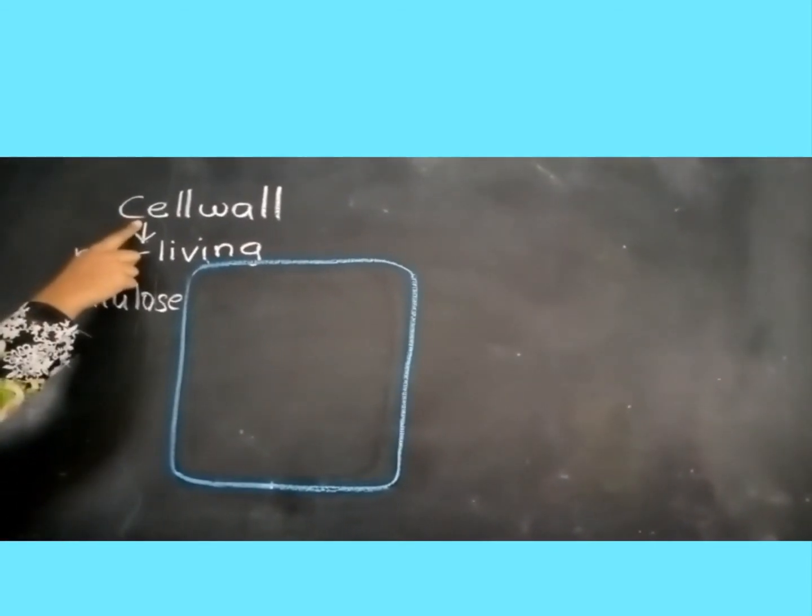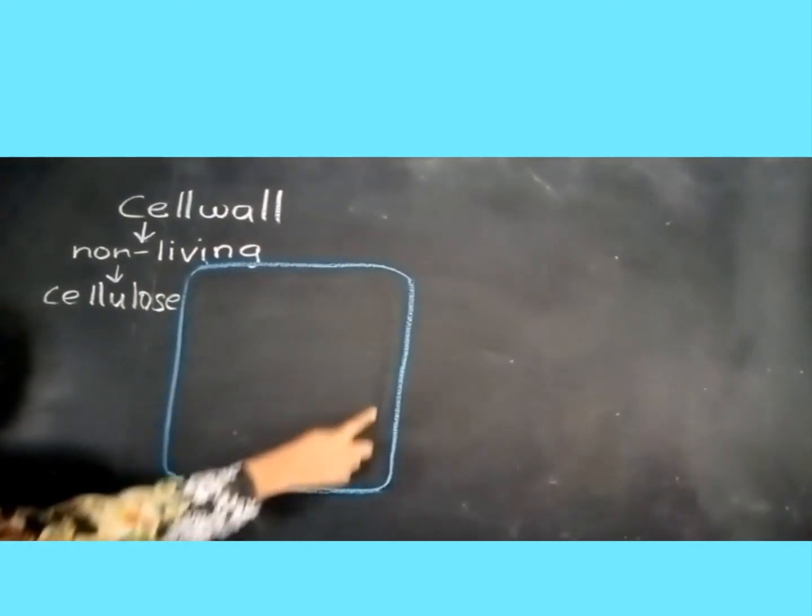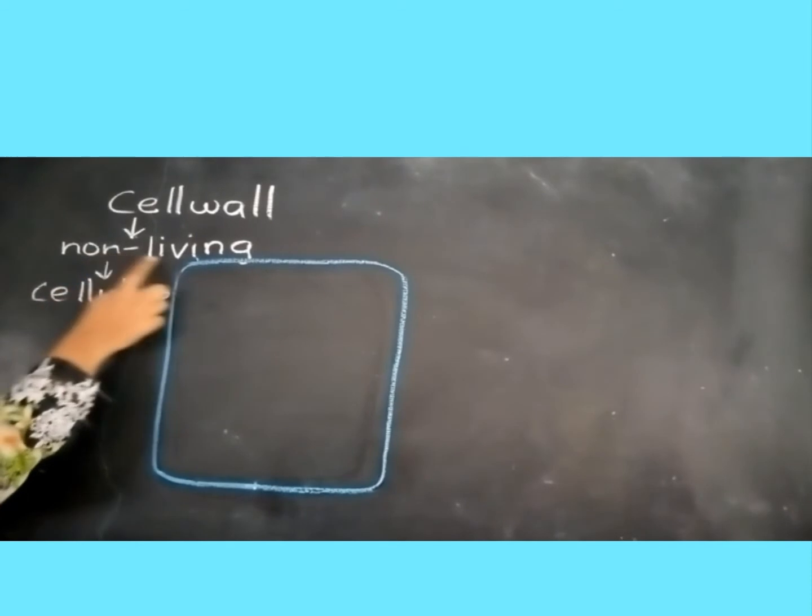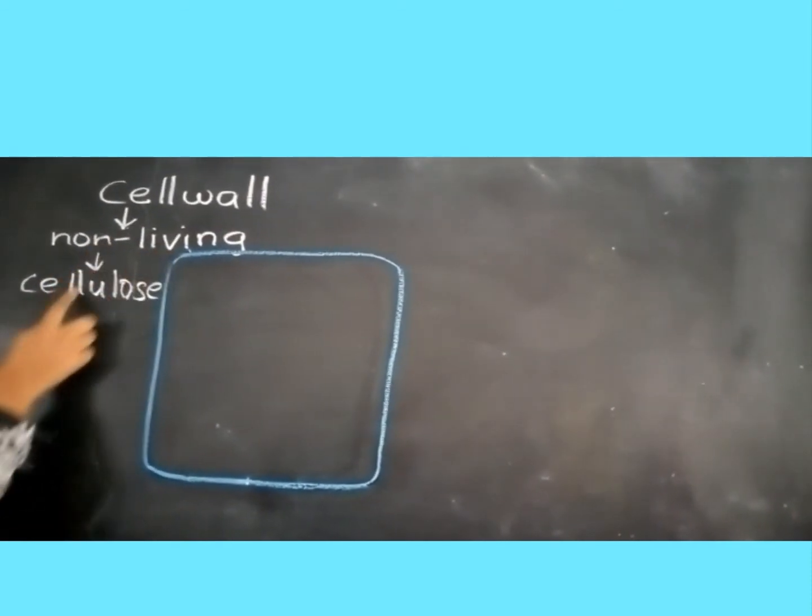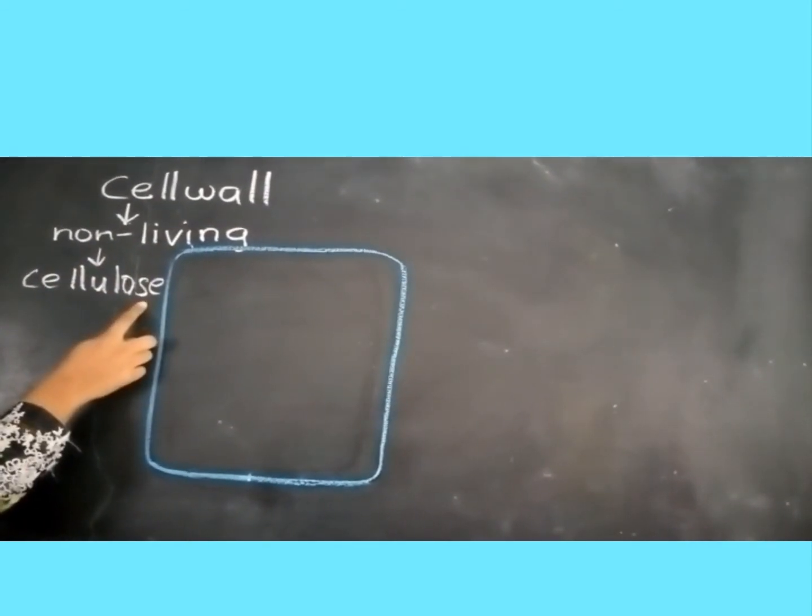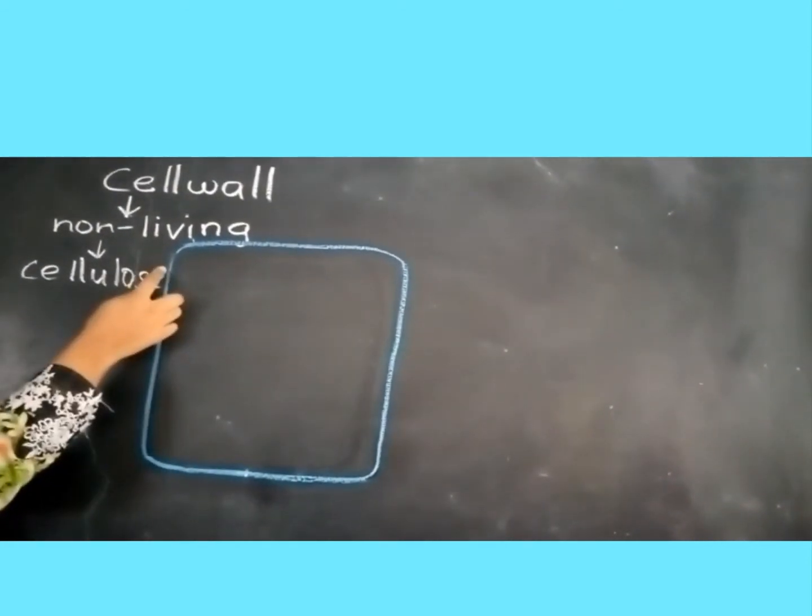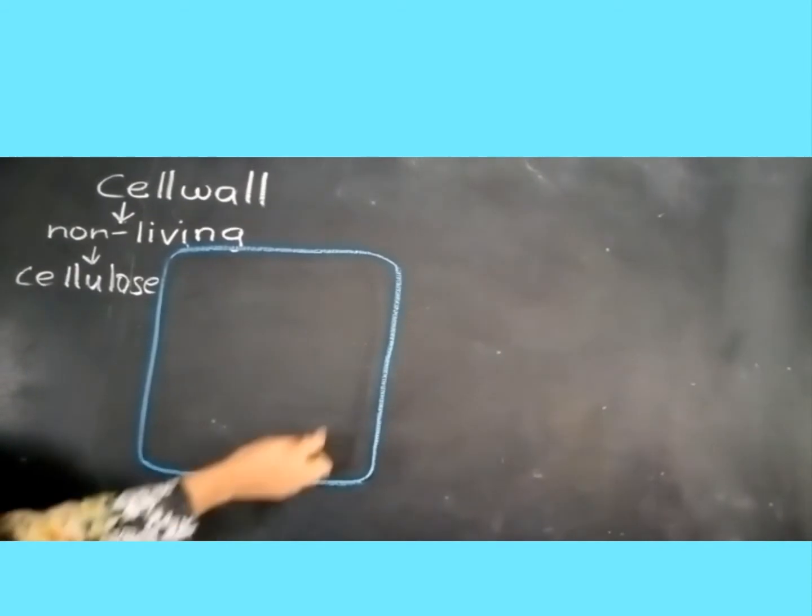Now we will discuss the cell wall. The cell wall is the outermost layer present only in plant cells. It is a non-living structure which is made up of cellulose. The function of the cell wall is to give mechanical shape to the cell and to protect the internal structure of the cell.